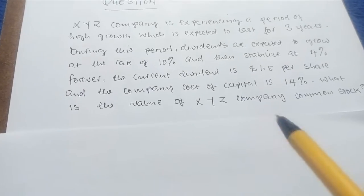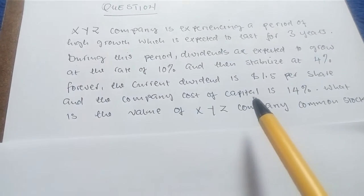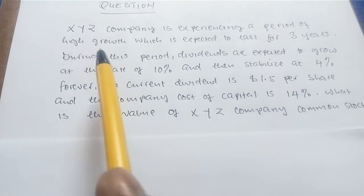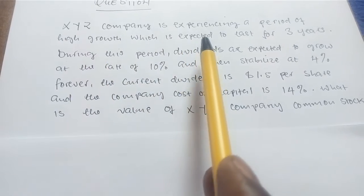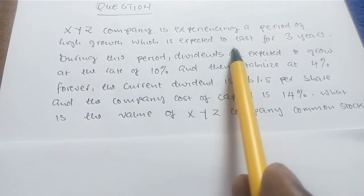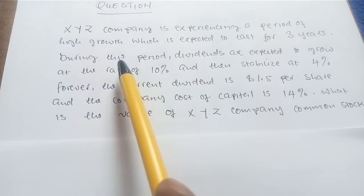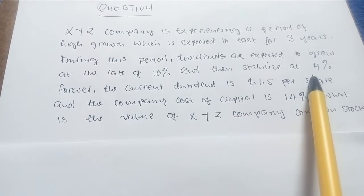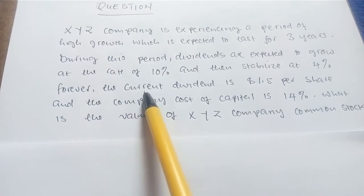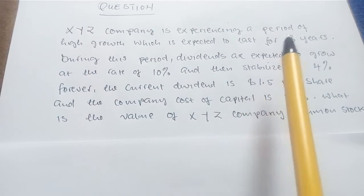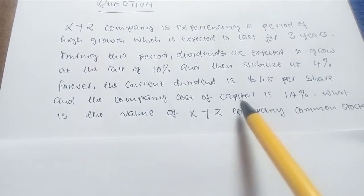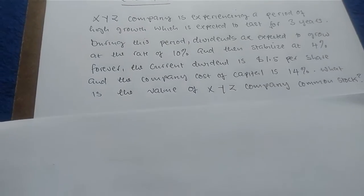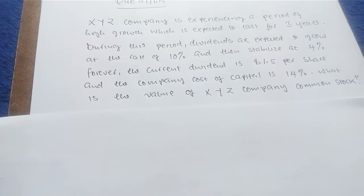Having gone through the four steps, let's look at this example. XYZ Company is experiencing a period of high growth expected to last three years. During this period dividends are expected to grow at 10 percent, then stabilize at 4 percent forever. The current dividend is $1.50 per share and the company's cost of capital is 14 percent. What is the value of XYZ Company's common stock?